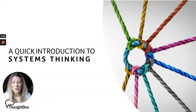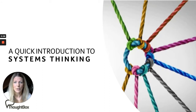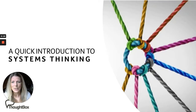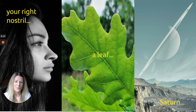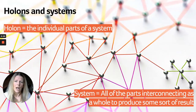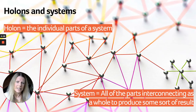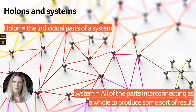Hi there, this is Rachel from Thoughtbox. I'm just giving a very quick introduction to systems thinking for those of you who are unfamiliar with this way of seeing the world. Let's start off with a question: what is the link between your right nostril, a leaf and Saturn? This isn't the beginning of some terrible joke. I want to start thinking about ways of seeing that help you to make connections. Systems thinking is all about seeing the interconnections of everything, seeing how everything is interlinked and that everything that we do has a connection to something else.